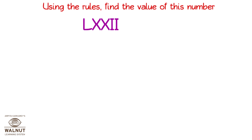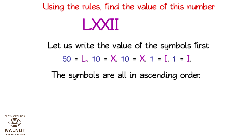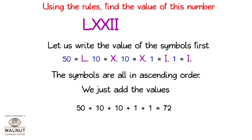Using the rules, find the value of this number: L, 2 X's and 2 I's. Let us write the value of the symbols first. 50 is L, 10 is X, another 10 is X, 1 is I and 1 again is I. The symbols are all in ascending order, so we just add the values. 50 plus 10 plus 10 plus 1 plus 1 is equal to 72. So L, 2 X's and 2 I's is equal to 72.